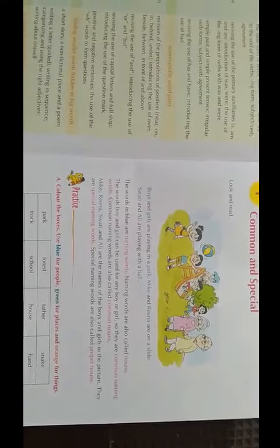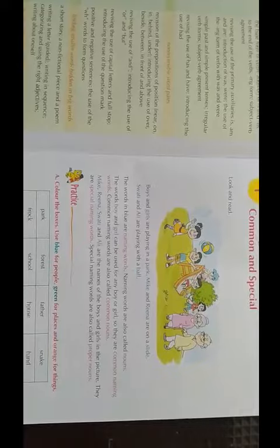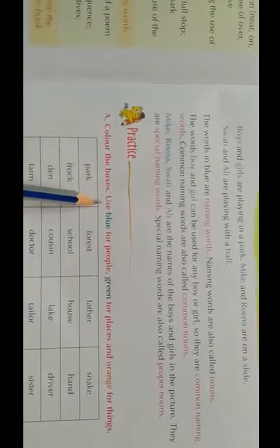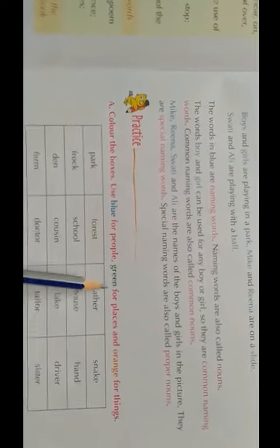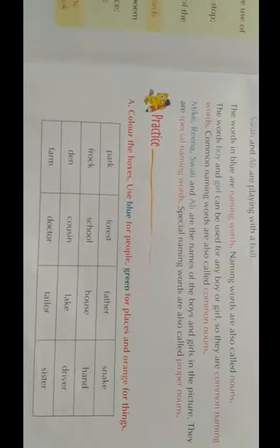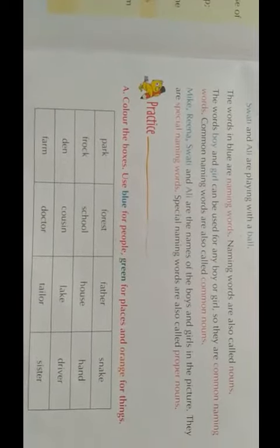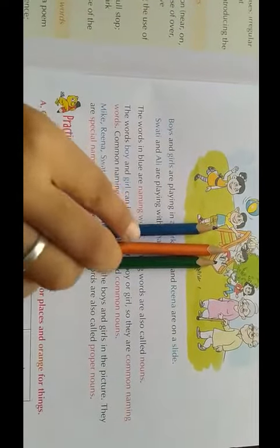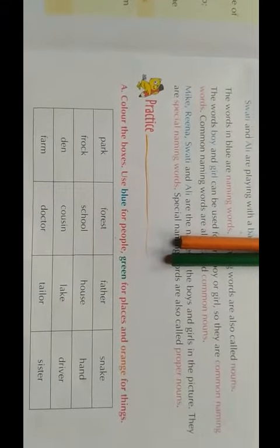Likewise, we will start with the exercise now. First, Exercise A — color the boxes. Use blue for people, green for places and orange for things. Now we will take three colors. First we will take blue color, we will use it for people.